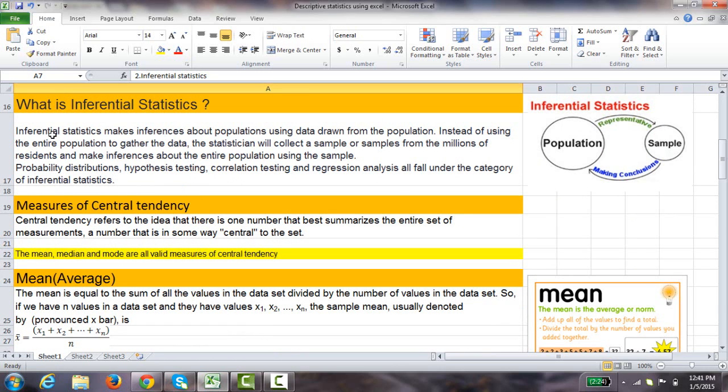Instead of using the entire population to gather the data, the statistician will collect a sample or samples from the millions of residents and make inferences about the entire population using that single sample.